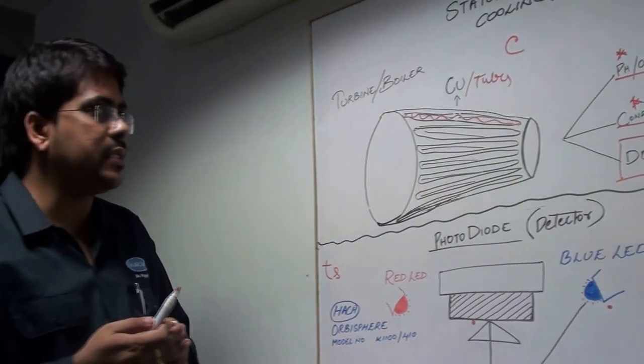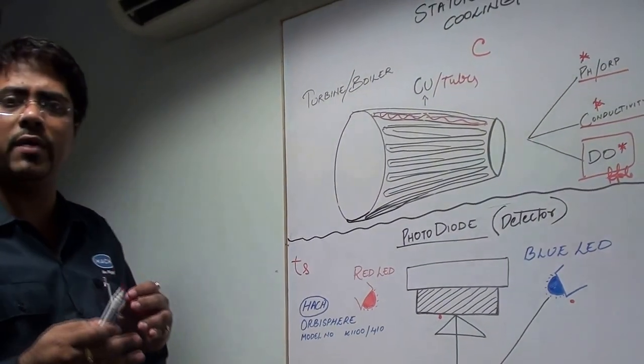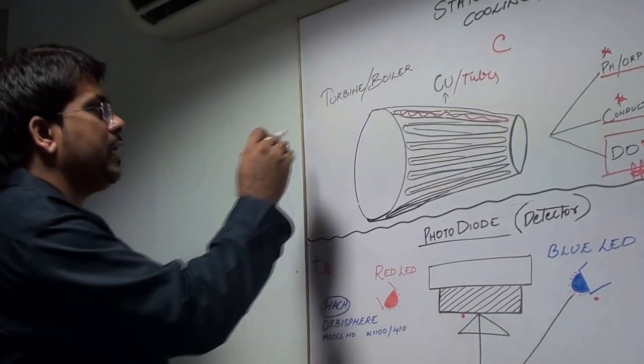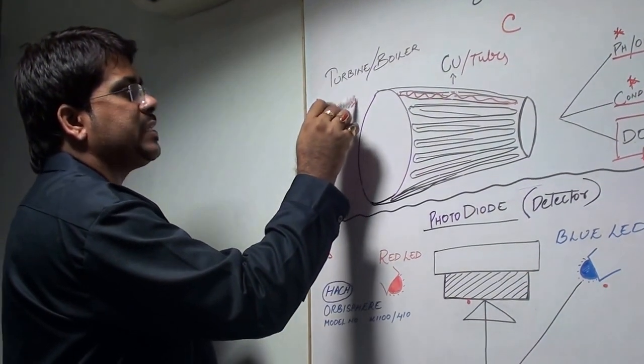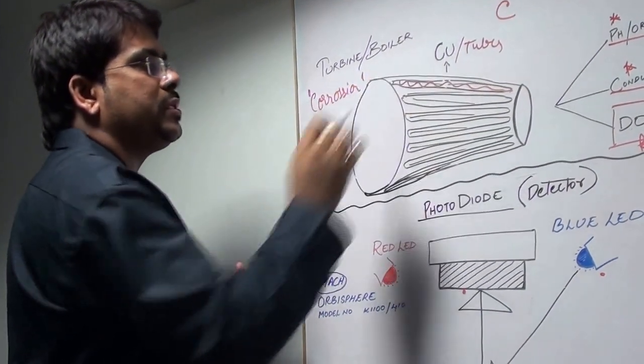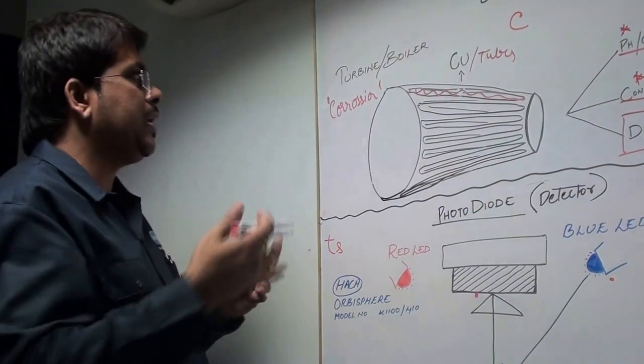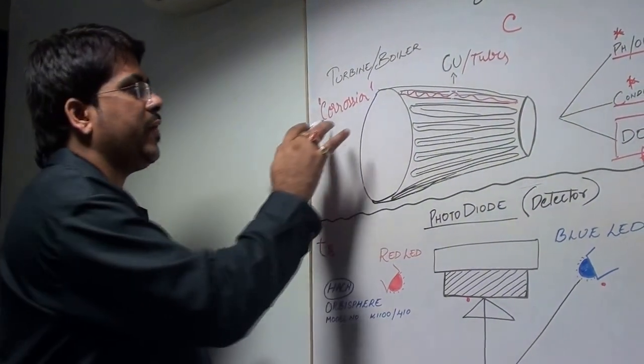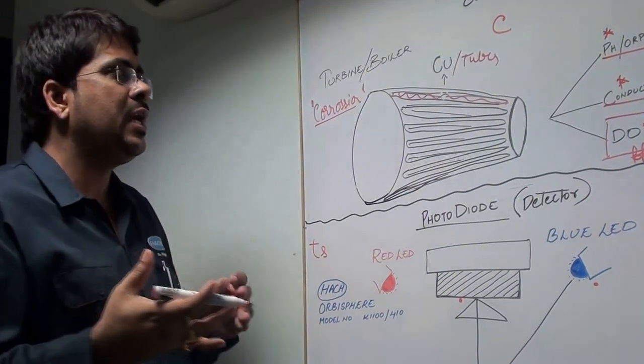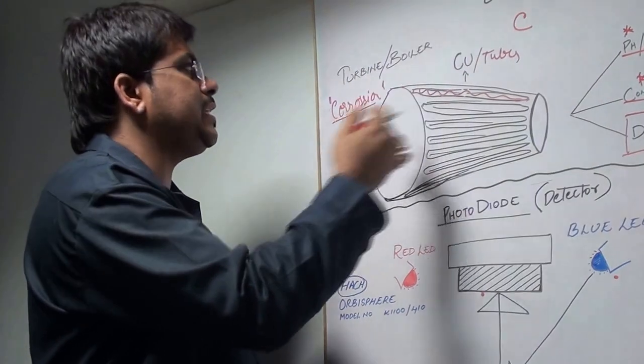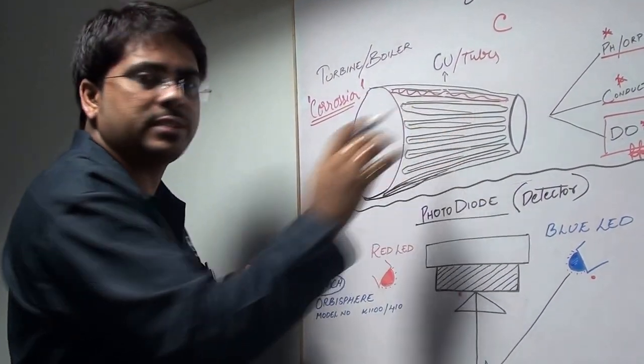Why is dissolved oxygen required? The most important phenomena we need to protect against is corrosion. These metallic copper tubes, when oxidized, will create the effect of corrosion. The presence of more oxygen will oxidize these and generate this corrosion effect on these tubes.